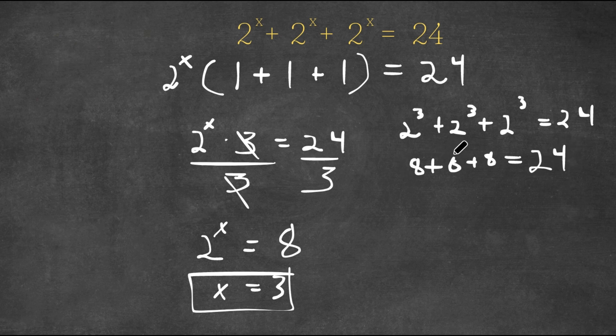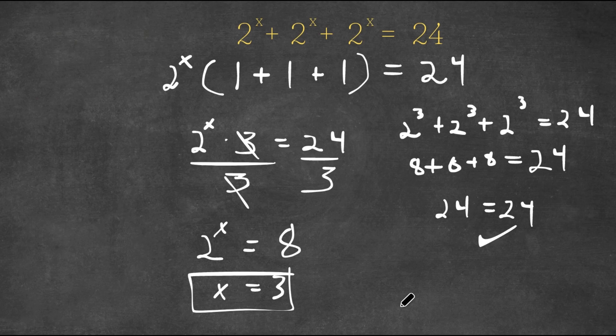Now 8 plus 8 is 16, and 16 plus 8 is 24, so I'm left with 24 is equal to 24. And because this is right, we know our solution is x equals 3.